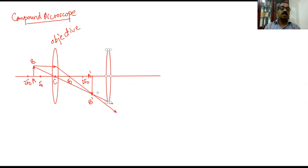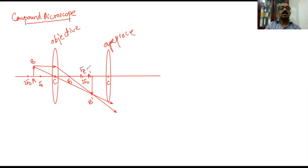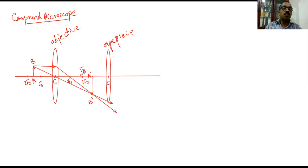The eyepiece lens should have a longer focal length than that of the objective lens. Also, the image A'B' formed should lie between the focus and the optic center of the eyepiece. This lens is the eyepiece. Draw the focus of the eyepiece and write it as Fe. The focal length of the eyepiece — C to Fe — should be longer than that of the objective.